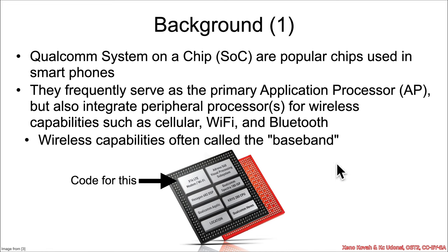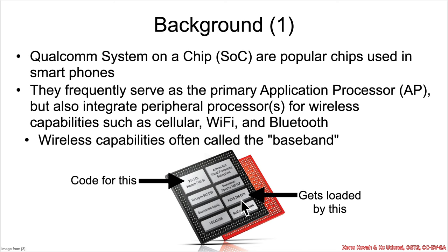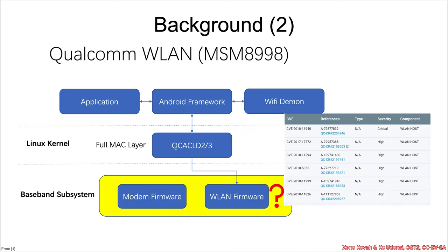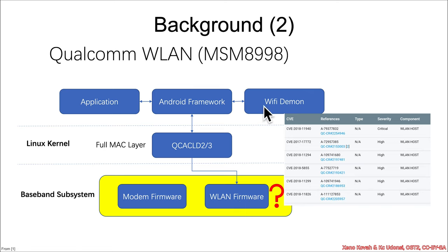The important thing to know is that the firmware for the modem or Wi-Fi gets loaded by the main application processor, or AP. In the research, they focused on the baseband subsystem which handles the modem and firmware. There are components in the Linux kernel that handle loading of the firmware, and then there's Android and Wi-Fi daemons and other things running on the AP.